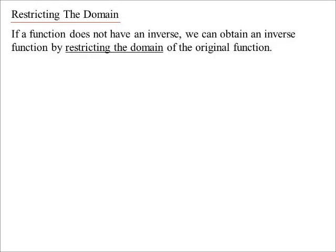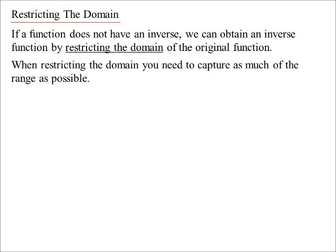Unless we do something — and that's why we restrict the domain of the original function. If the original function doesn't have an inverse, we say we're not going to look at the whole curve, just a piece of it that will have an inverse. So we restrict the domain. When restricting the domain, you want to try to get all of the range if you can — if not, as much as possible. I always try to include zero if I can, and if there's a choice, I'll tend to go with the positives rather than the negatives.